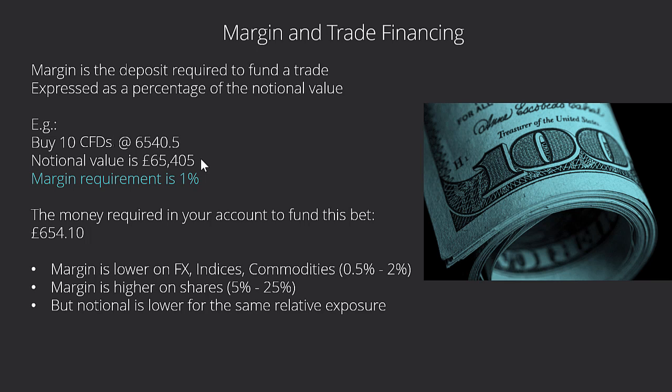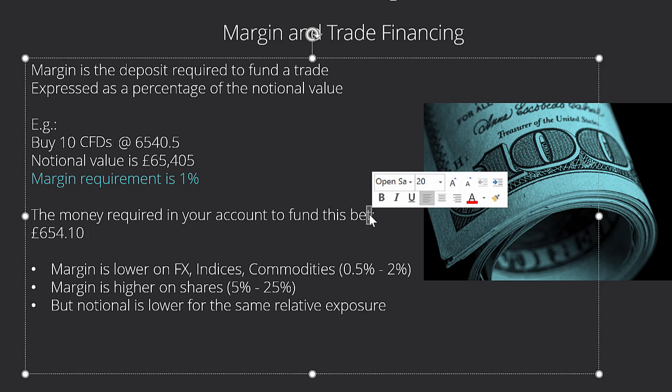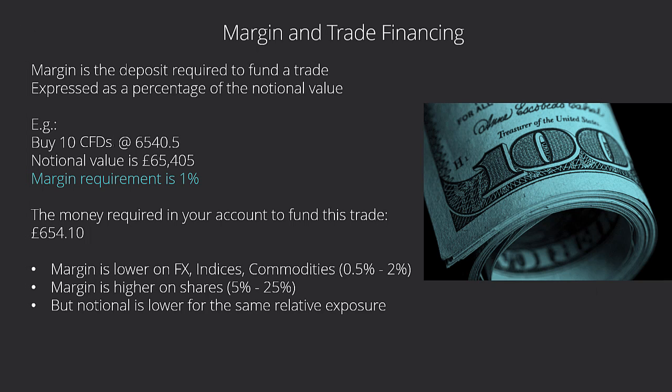No broker is going to say 'give me 65 grand for this position.' They're going to say: this is the Footsie, we know it's not going to halve overnight, we know how it moves even under extreme conditions. They're also reasonably hedged because lots of people are long and short. So a good broker will say they're quite happy for you to give them 1% of the notional value as a margin requirement — the amount you need in your account to open this position. That works out to £654.10.